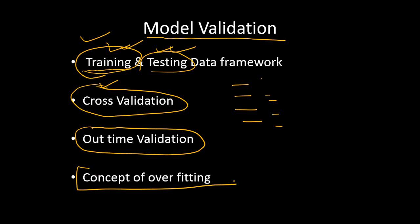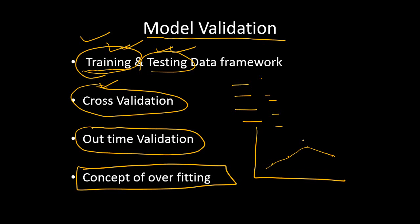The last concept related to the bias-variance trade-off is overfitting. If the model is doing very well in the training dataset and fitting very well — for example, if there are three or four data points and we build a non-linear model which passes through all four data points — then it has zero bias. But is it a good model? It is not a good model, because this model which passes through all the data points will fail to do well on a new dataset. The variance will be high in this case. This situation is known as overfitting — we are over-generalizing the situation.